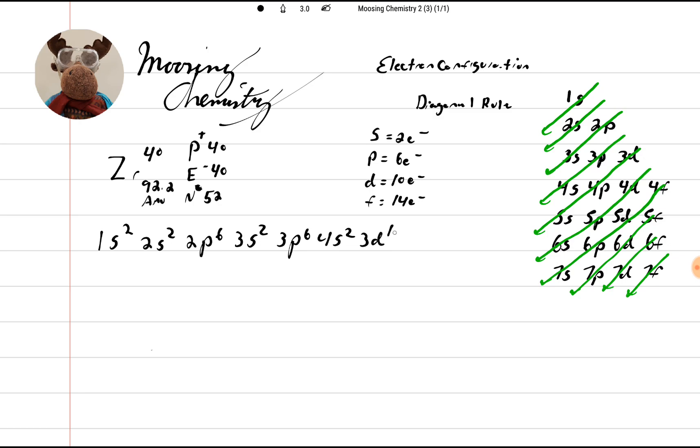3d10. So how many electrons have we used up? 2 and 2 and 6 make 10. 2 and 6 and 2 make 20. And that makes 30. So we still got a ways to go.